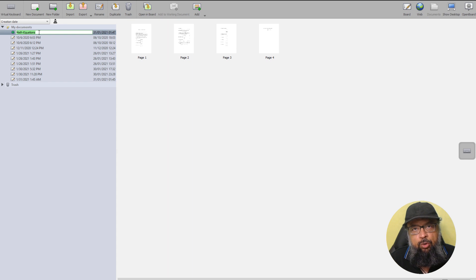Now we have this new document, Math Equations. If I click here, it will be shown at the bottom of the list. It has four pages. And if I select any of these pages, I can click on this Open in Board. I can also select multiple pages by pressing the Ctrl and selecting these pages. So let us select only this first one, and I click Open in Board.